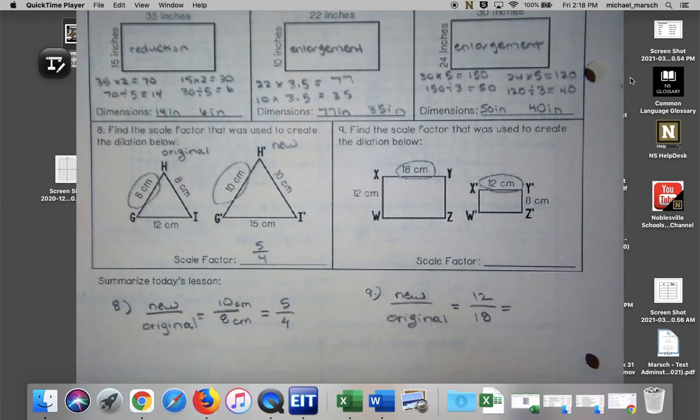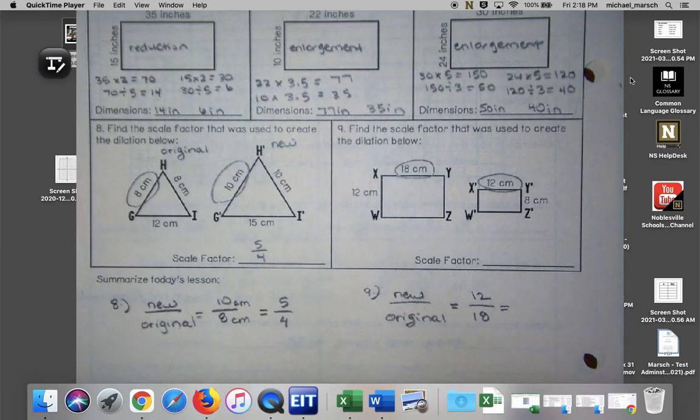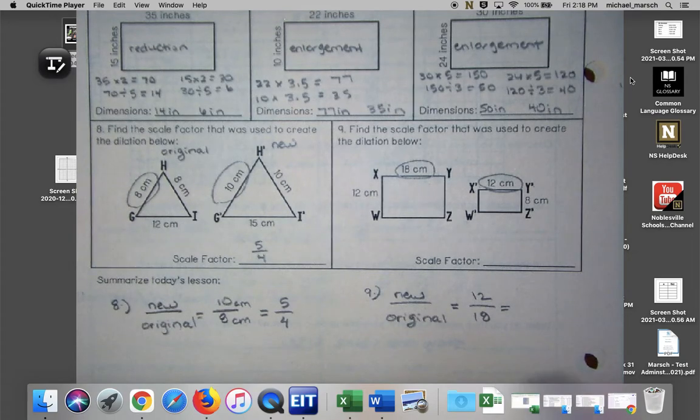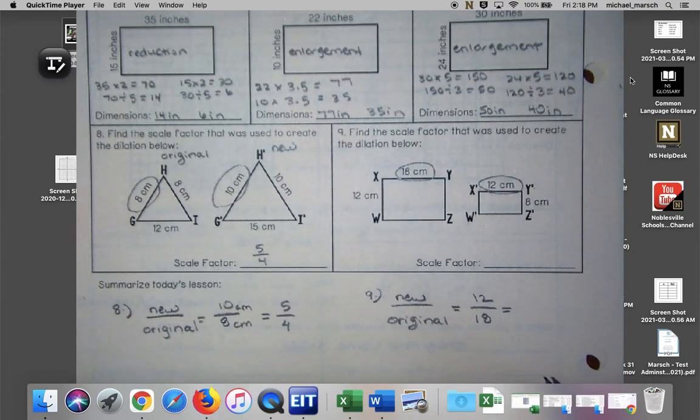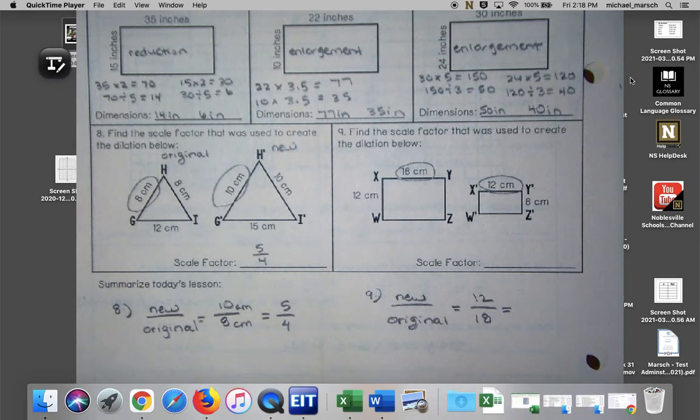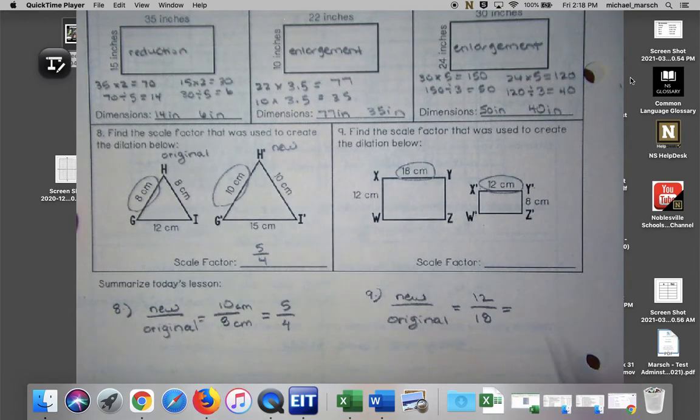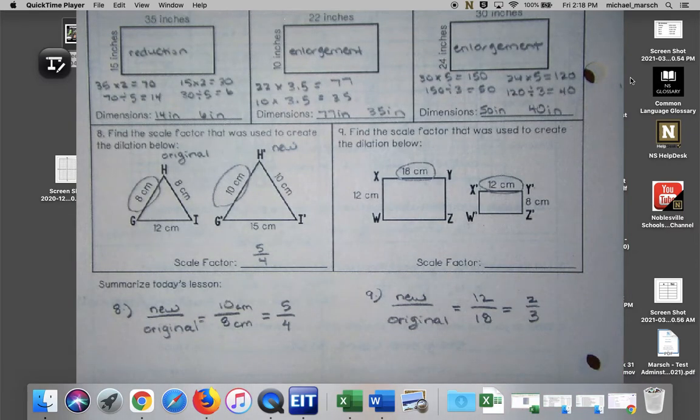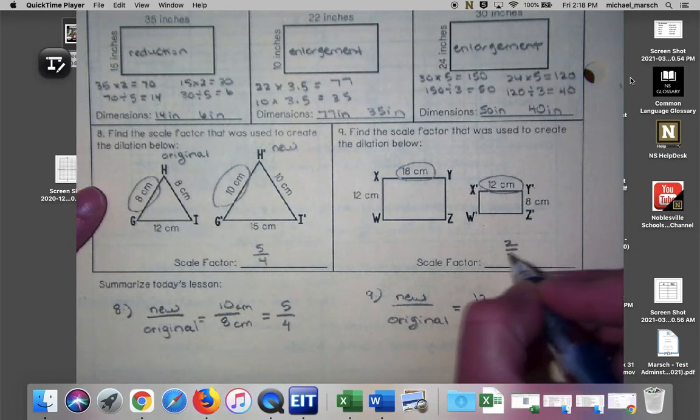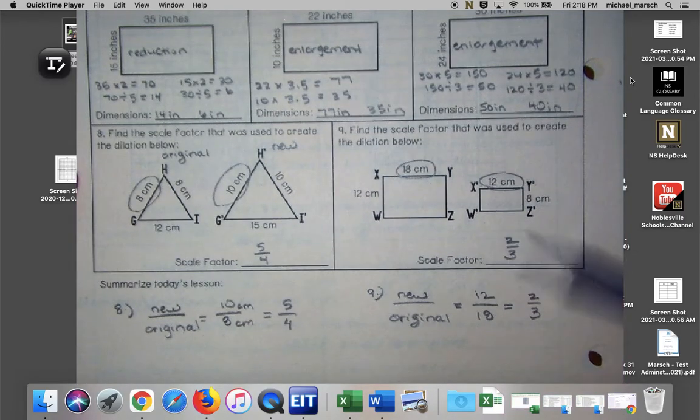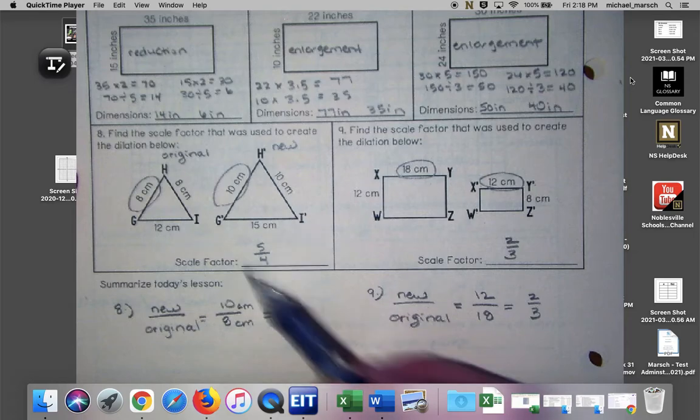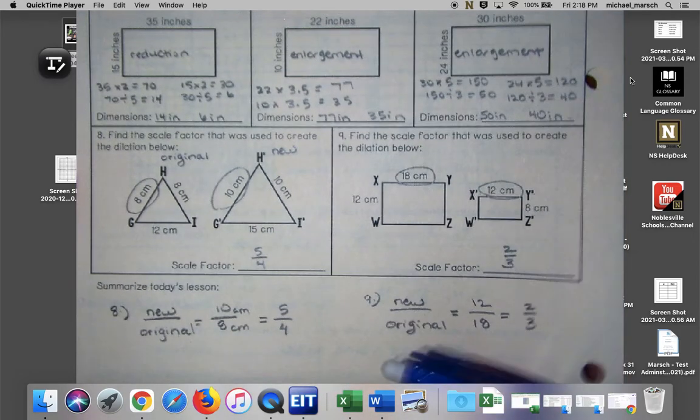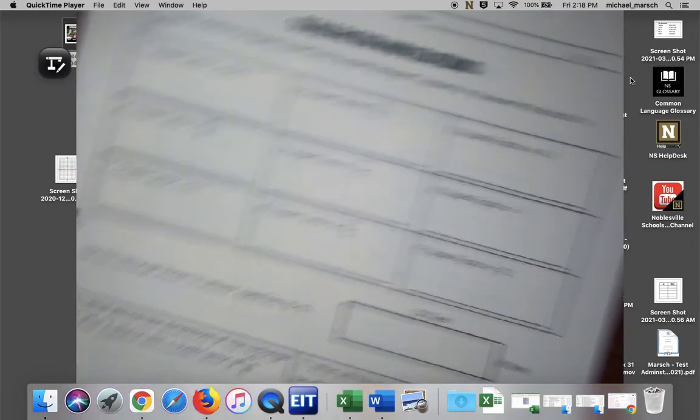Two thirds. Yep, two thirds. Six can go into both of these, two thirds. So we knew it was going to be a fraction. This one is a fraction but it's improper so that's how we know it's enlarging. All right, skip the next page for now. Let's go on to dilations on the coordinate plane.